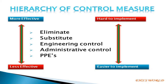Always while carrying out risk assessment, we go step by step. First, focus on elimination. If elimination is not possible, then substitution. If substitution is not possible, then engineering control. If engineering control is not possible, then administrative control, and finally PPE. We must cross-examine what kind of control measure is suitable for the particular hazard.